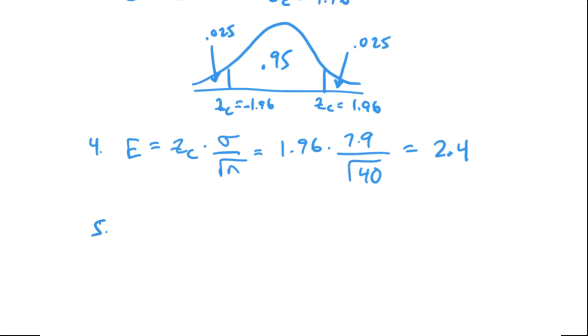And then lastly to get the confidence interval we use this formula. Remember in the center right here is the population mean which we are trying to estimate with this interval. So we have 29.6 for the mean minus the margin of error, and then the mean plus this margin of error. And that gives us 27.2 to 32.0.